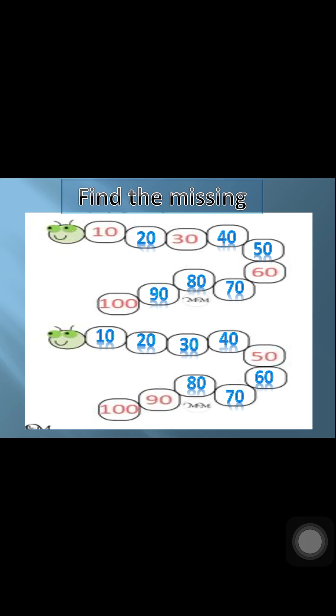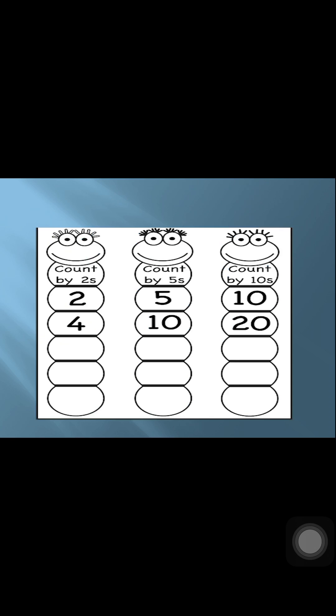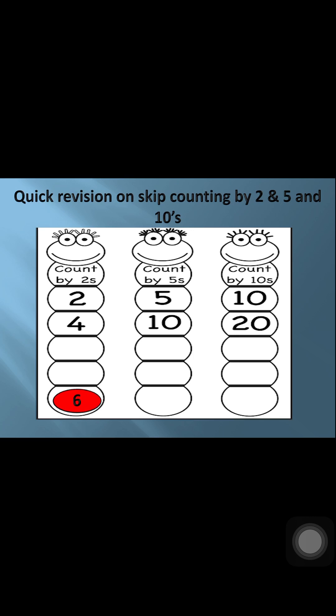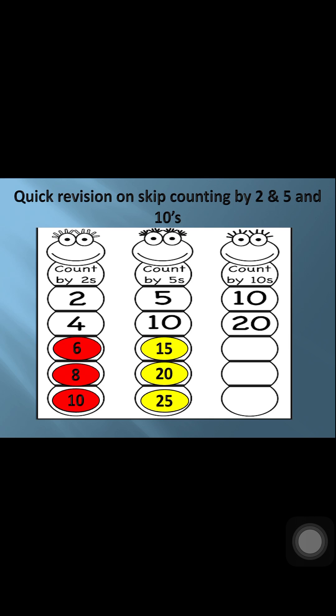Okay, and by this way we finished all the skip counting. We took skip counting by 2, we took skip counting by 5, we took skip counting by 10. Shall we revise all? Yes. Count by 2: 2, 4, 6, 8, 10. Again, count by 5: 5, 10, 15, 20, 25. Count by 10s again: 10, 20, 30, 40, 50.